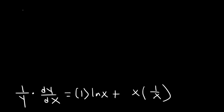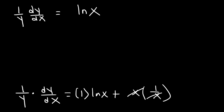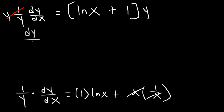Now let's simplify the right side. We have the natural log of x, and x times 1 over x is just 1. So we have ln x plus 1. Now we need to multiply both sides by y. Y times 1 over y is 1, so on the left side we get dy/dx, and on the right side it's y times the quantity ln x plus 1.